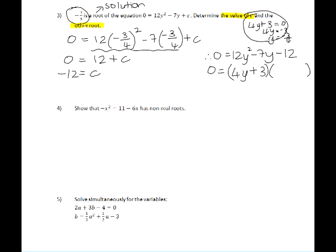If we now want to figure out our other factor, 4 times 3 will give you the 12y squared, and 3 times 4 will give you the 12. It must be negative 12, so you know that it must be 3y minus 4. So therefore, y is negative 3 quarters, which we already knew, or y is equal to 4 thirds.